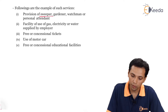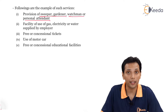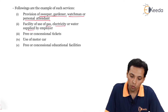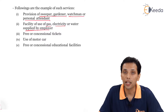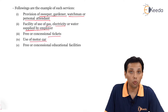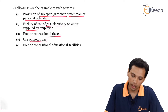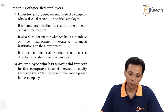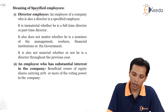Following are examples of such perquisites taxable in the hands of specified employees: provision of a sweeper, gardener, watchman or personal attendant; facility of use of gas, electricity or water supplied by the employer; free or concessional tickets; use of a motor car; and free or concessional educational facilities.